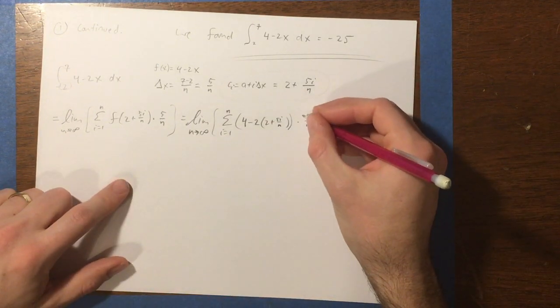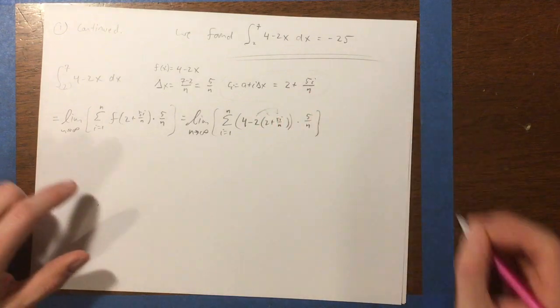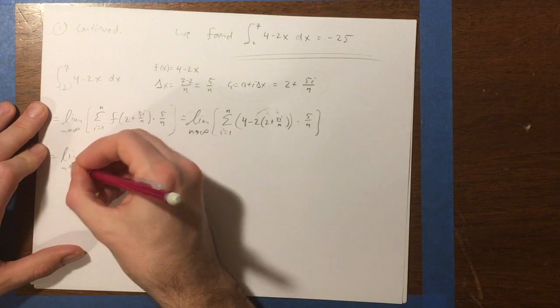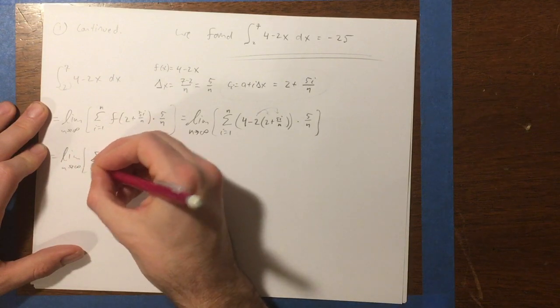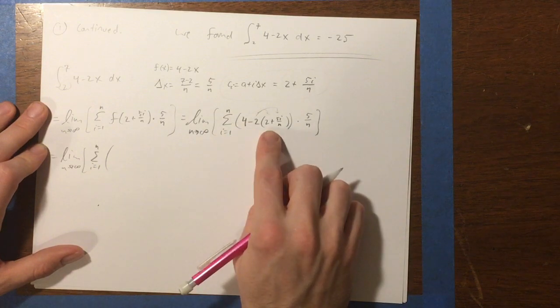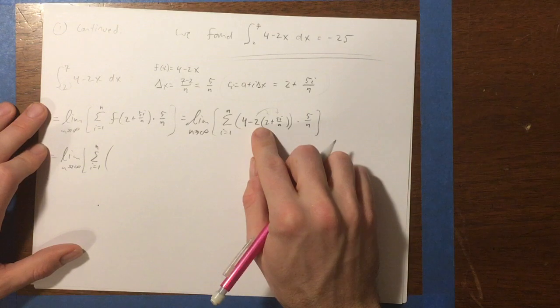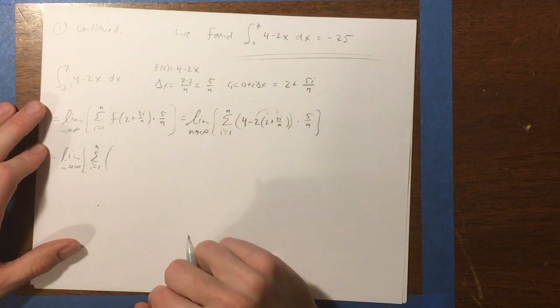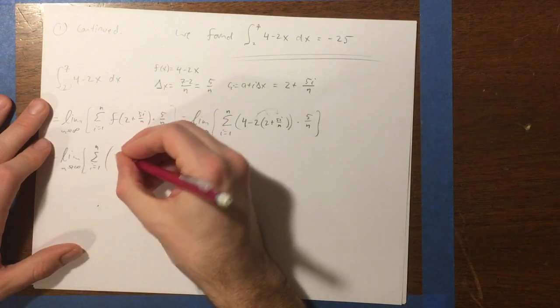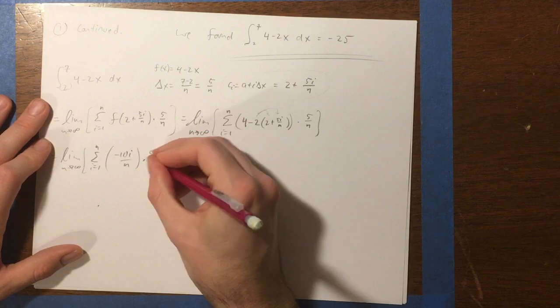So now, I'm going to do some things. I'm going to first distribute this negative 2. So in that sense, we're going to get 4 minus 4. Oh, this is nice. 4 minus 4. This is going to cancel. And then minus 2 times 5i over n. So that would be negative 10i over n. And then still times 5 over n. We've got to do that.